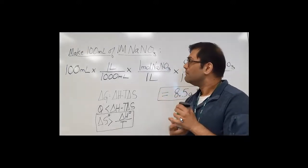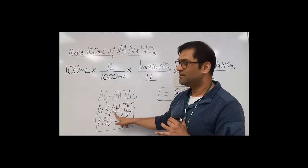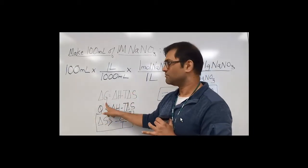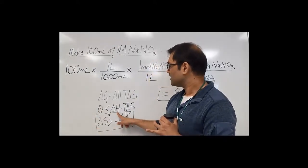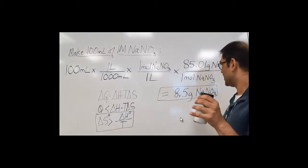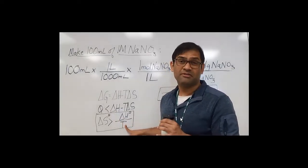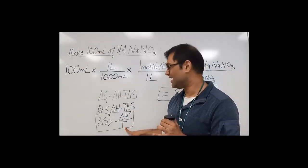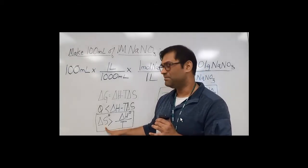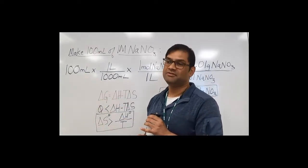So what we will do is weigh out about 8.5 grams of sodium nitrate, put it in 100 milliliters of pure deionized water, and then measure delta H. Remember, delta H has to be negative for this reaction to proceed forward. We'll calculate delta H when we dissolve 8.5 grams in 100 mL of water. Our temperature is about room temperature, 25 degrees C, which we will convert to Kelvin, and we'll calculate the minimum entropy required for NaNO3 to dissolve.